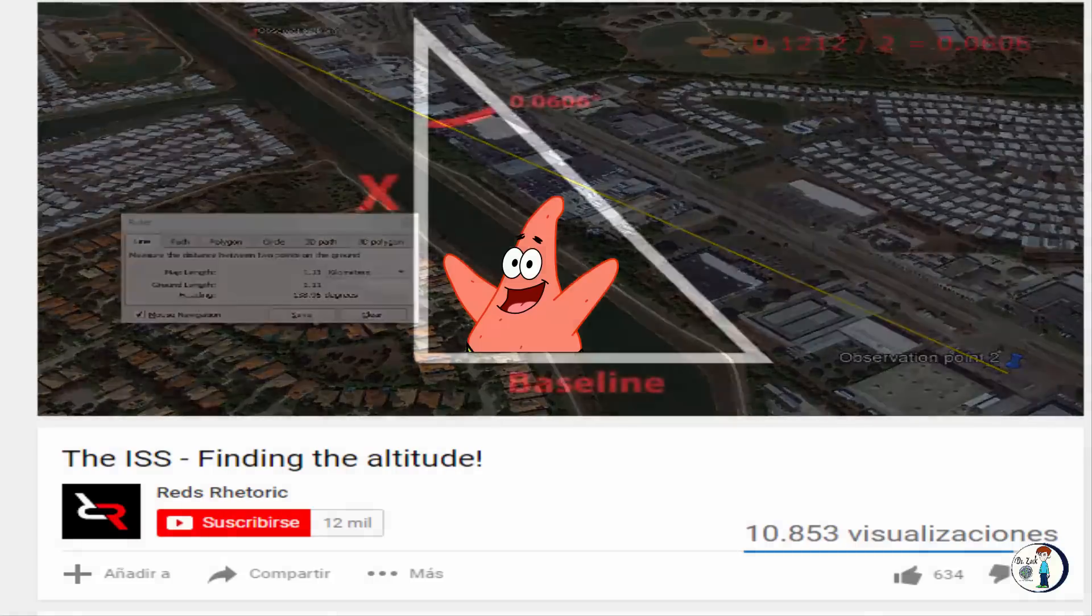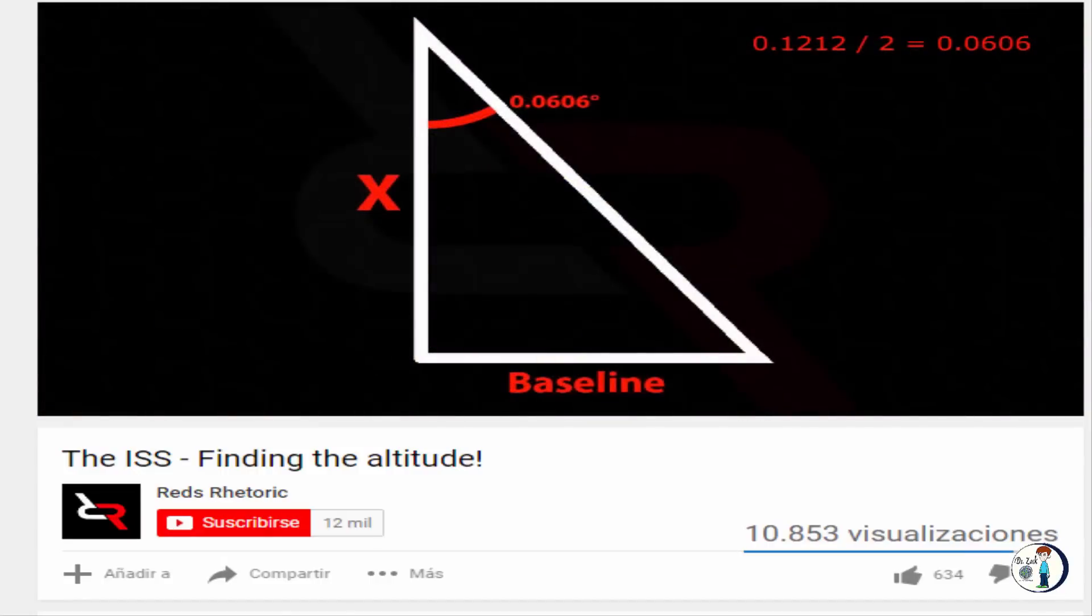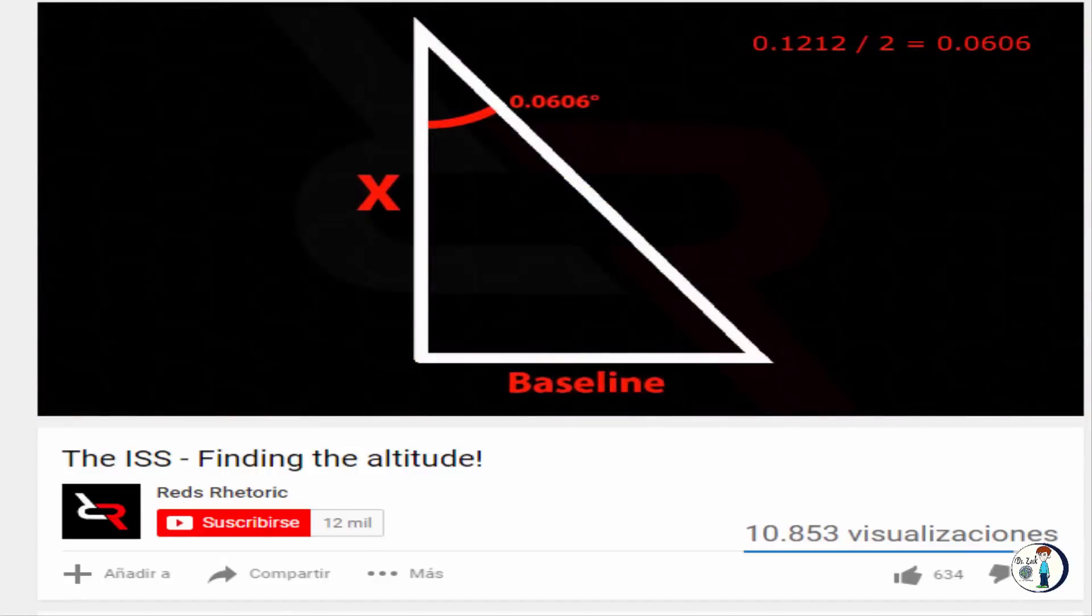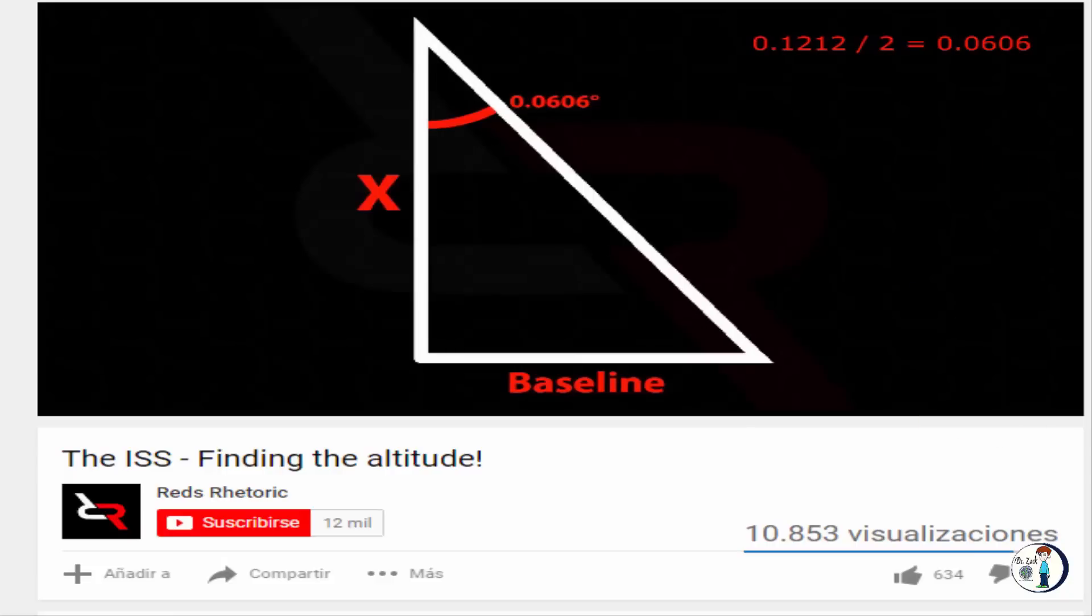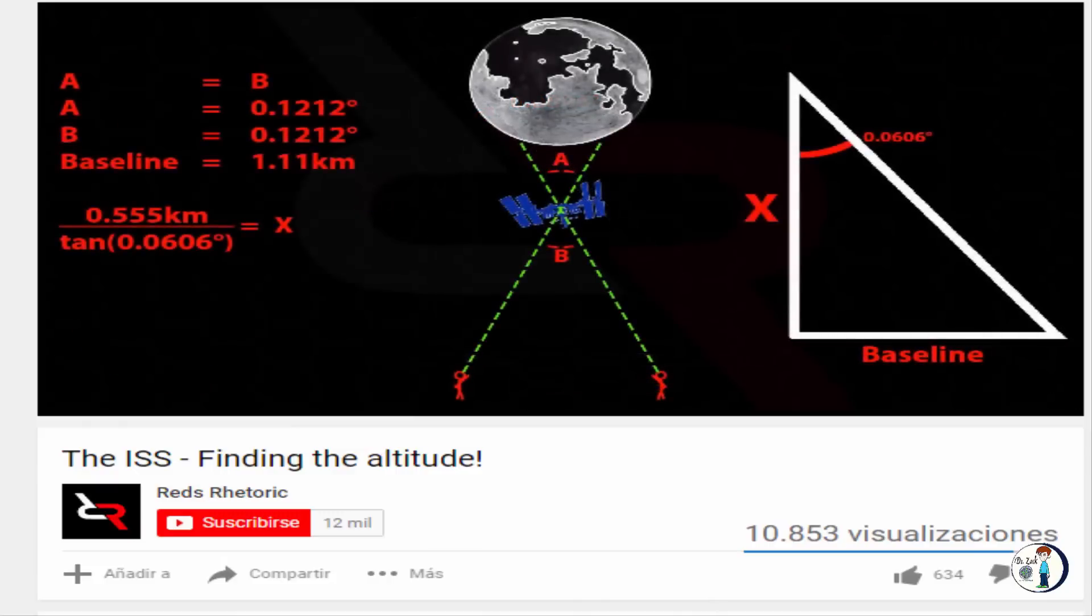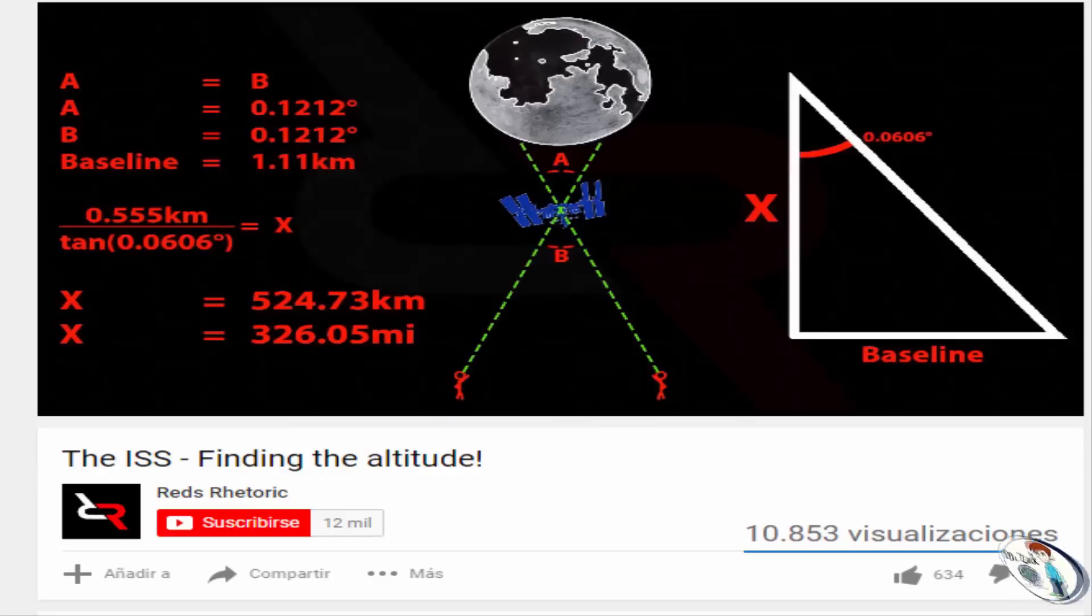To do this, let's cut our triangle in half, making it a right triangle. What we're looking for is length X, the distance between us and the International Space Station. Let's solve for X: 0.555 kilometers divided by the tangent of 0.0606 degrees gives us 524.73 kilometers, or 326.05 miles. This means during our observation we were seeing the ISS from 326 miles away.